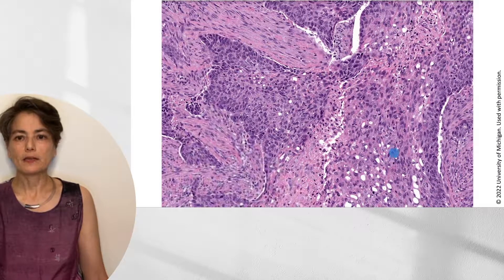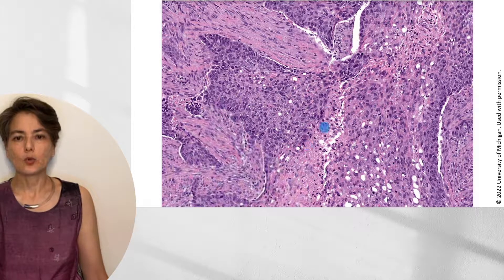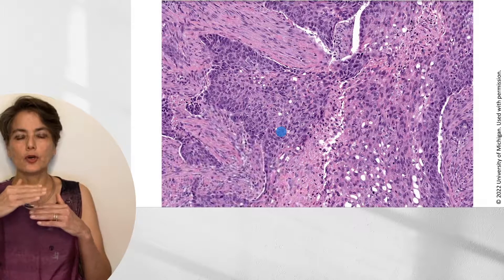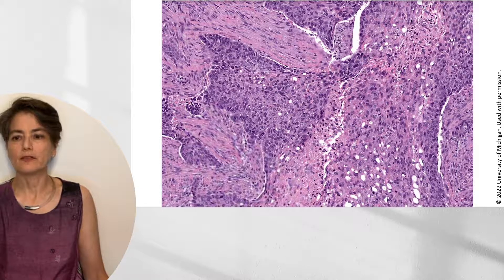On higher magnification, we see invasion into surrounding soft tissue with a desmoplastic response, irregular borders and jagged edges indicating invasion. The clue that this is squamous cell carcinoma is that it's doing what squamous cells do: as squames mature they would normally be shed off, but here they have nowhere to go, so they form a necrotic cystic structure. And we see no mucin, which would instead suggest adenocarcinoma.